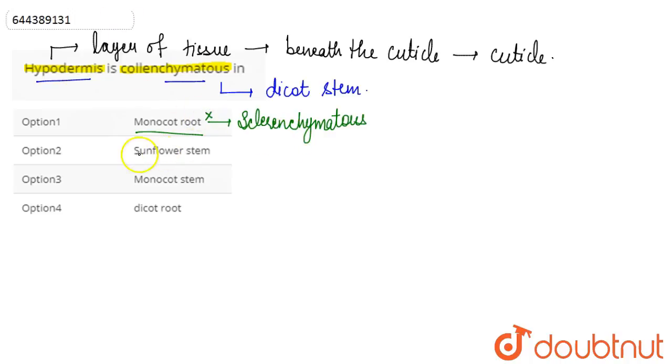Next is sunflower stem. Sunflower is a dicot. As we discussed, we see collenchymatous hypodermis in dicot stems. So in sunflower stem, the hypodermis is collenchymatous. This will be the correct answer, but let's look at the other options as well.